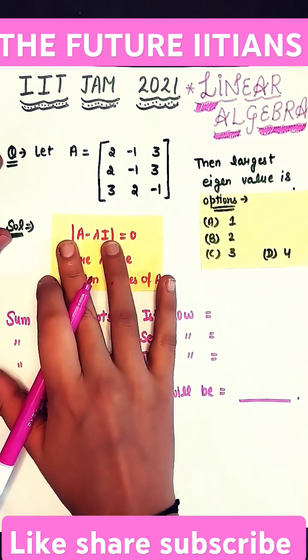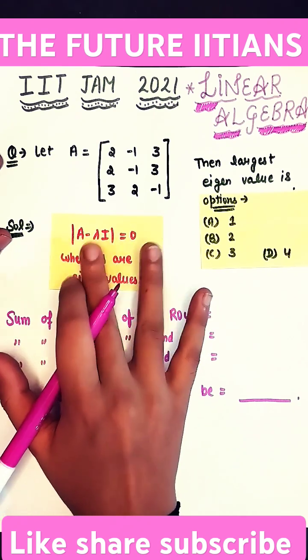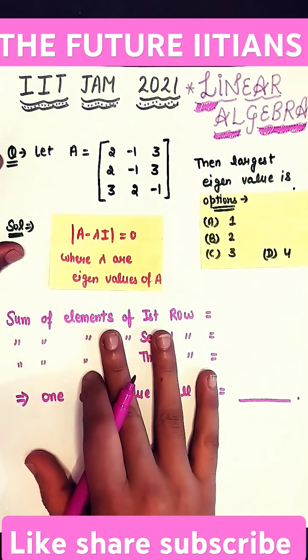The basic method is determinant of A minus lambda I equals to 0 and we need to find the value of lambda. But this is a very lengthy method to solve, so we are not applying this method here. There is a short trick that we are going to use.